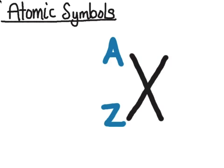The form for atomic symbols is written with X being the symbol for the element — so Sn for tin, or W for tungsten, or O for oxygen. The A and Z are numbers that help us determine the structure of the nucleus and the number of protons within the nucleus.